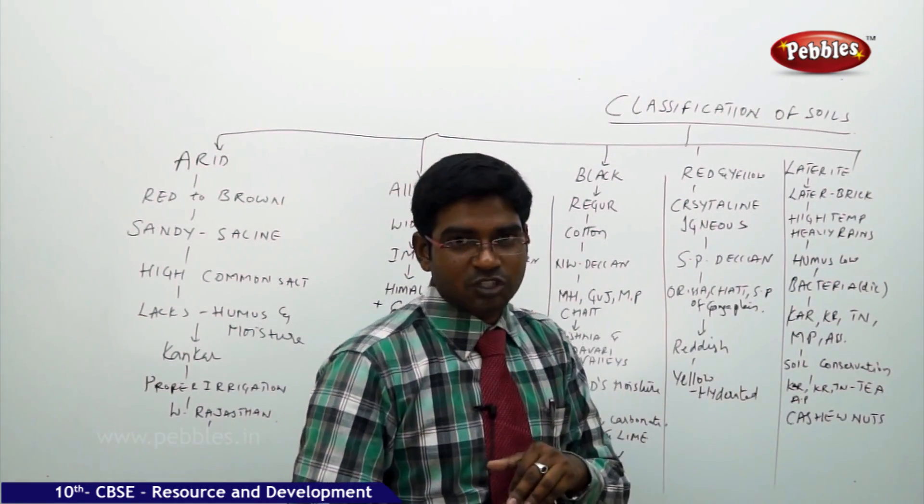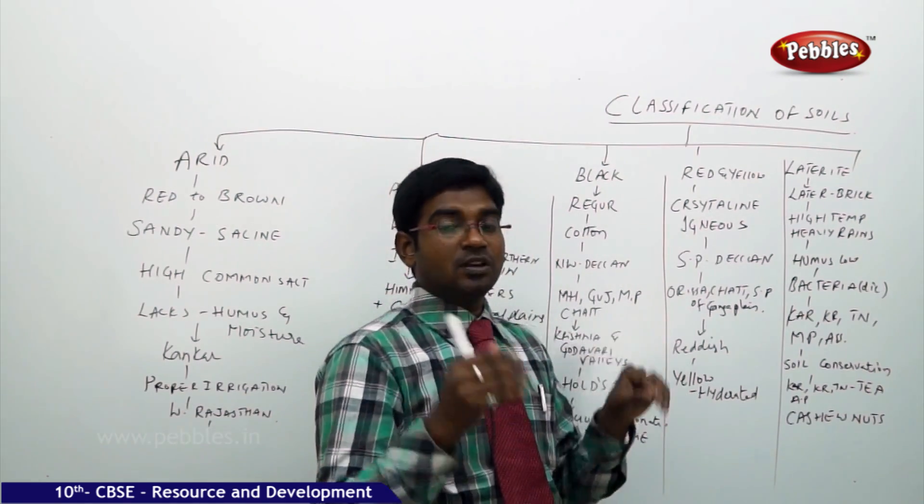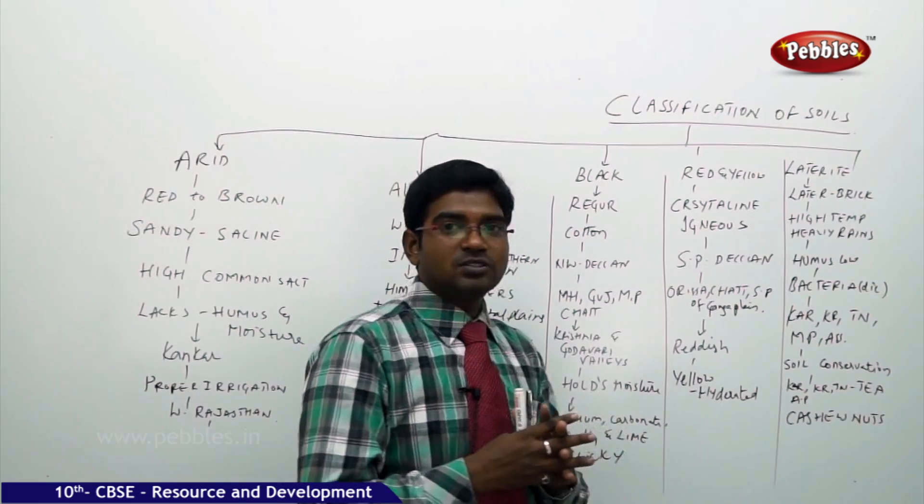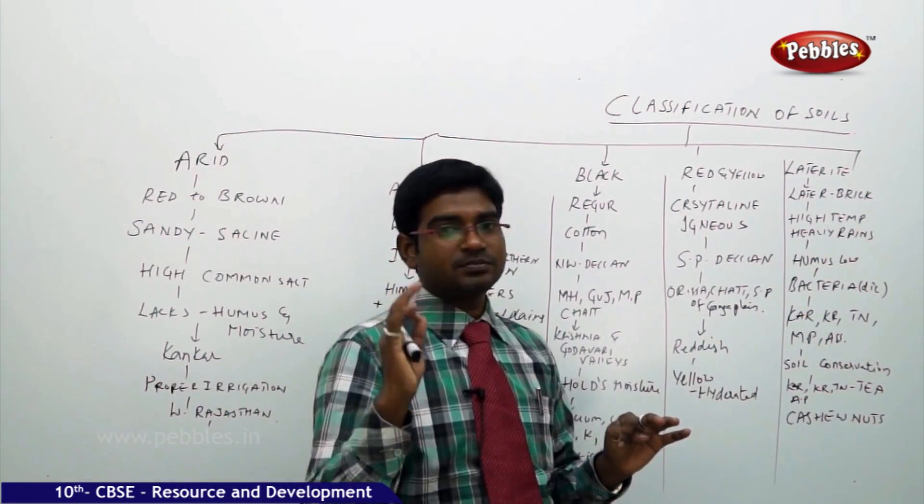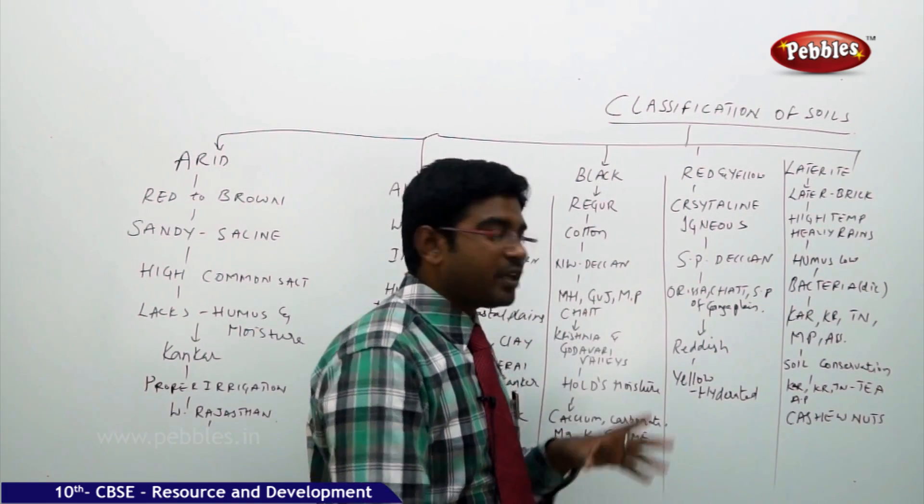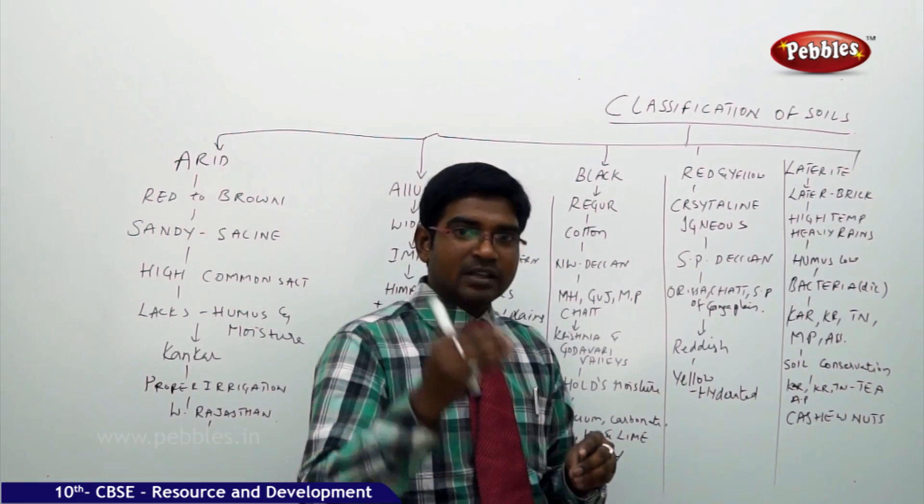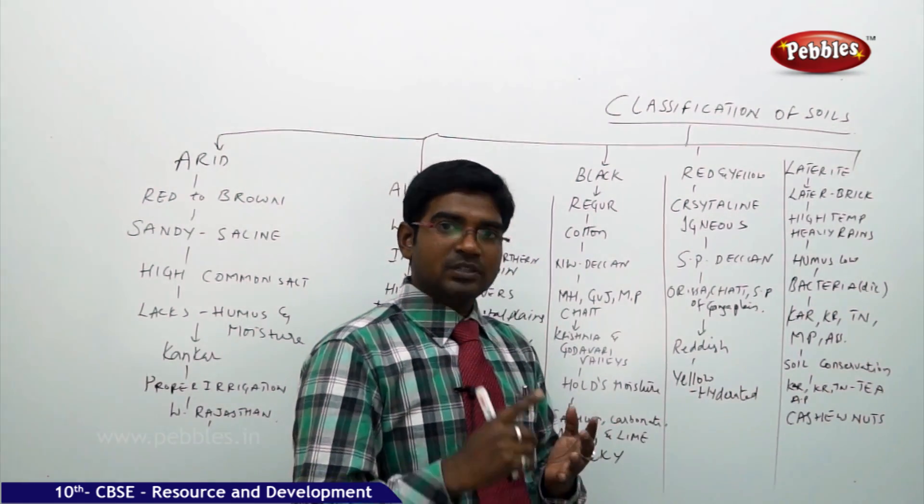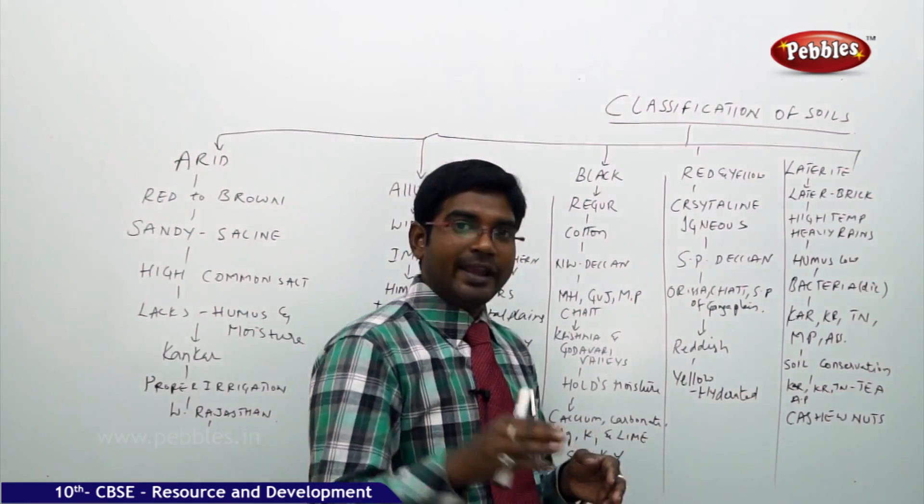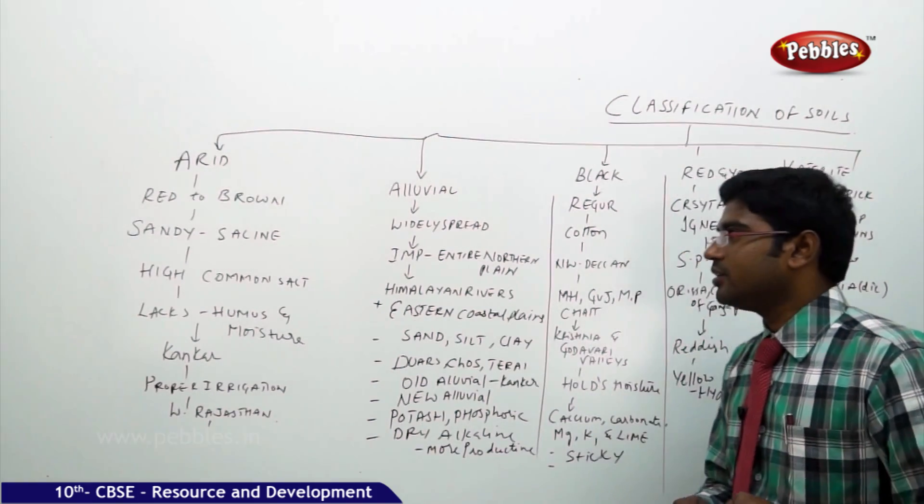But through using proper soil conservation methods, we can use this soil for cultivation of tea and cultivation of cashew nuts. So, the states which are following the proper soil conservation methods and utilizing the land for this tea and cashew nuts are Karnataka, Kerala, Tamil Nadu and even Andhra Pradesh. So, that we have the different categories of soils.